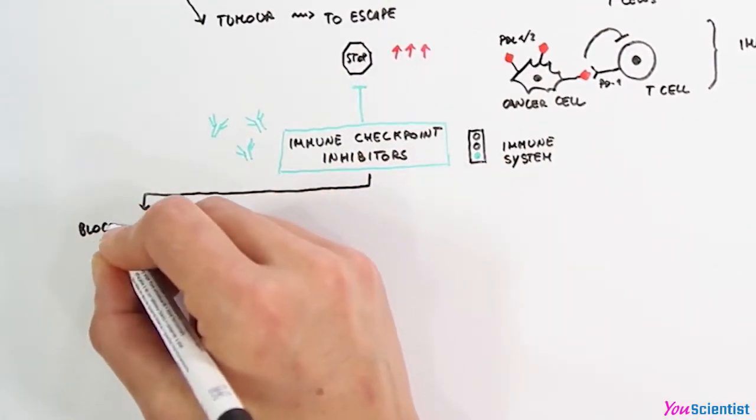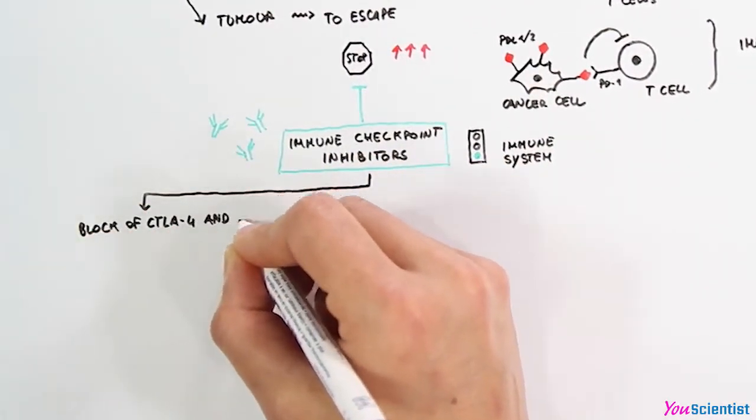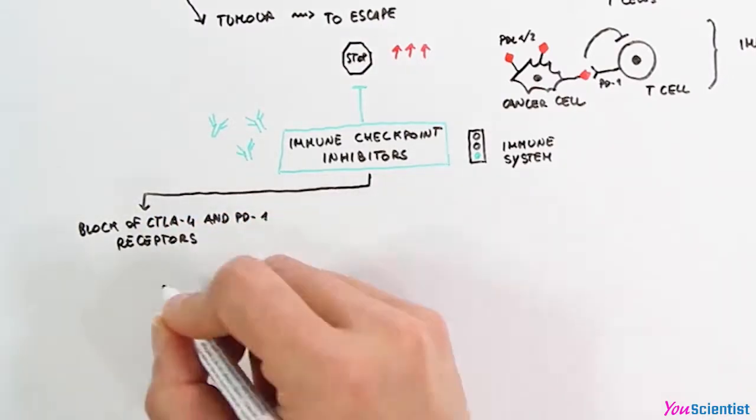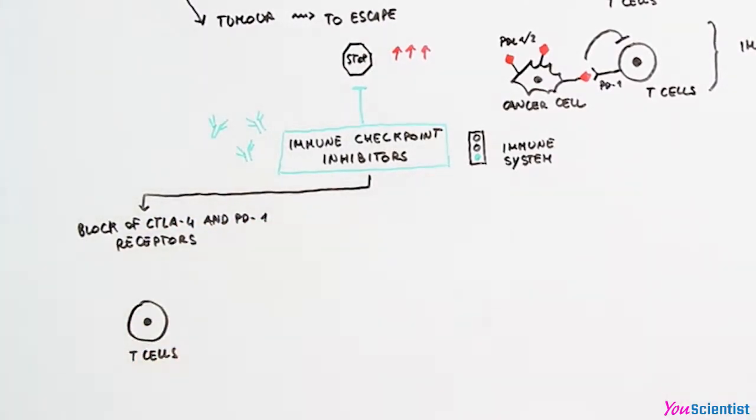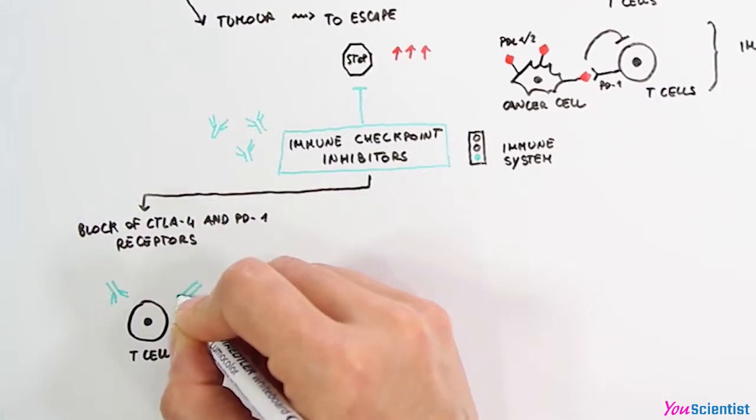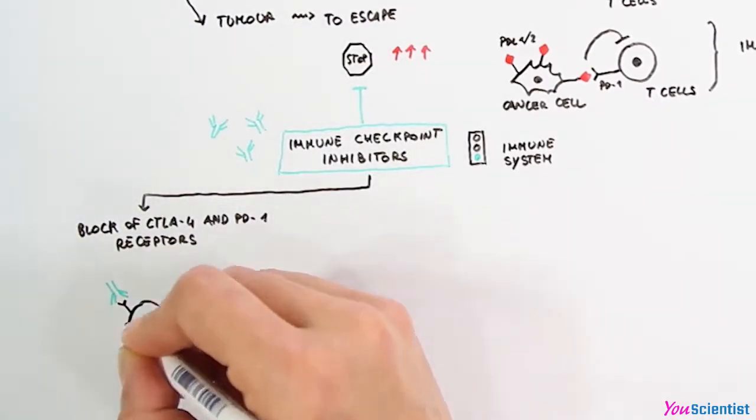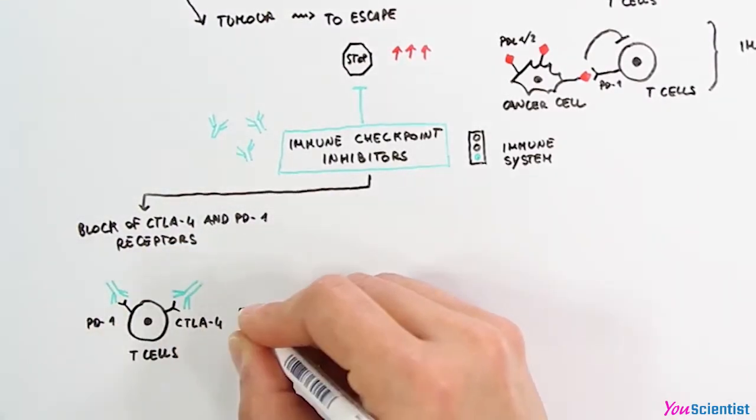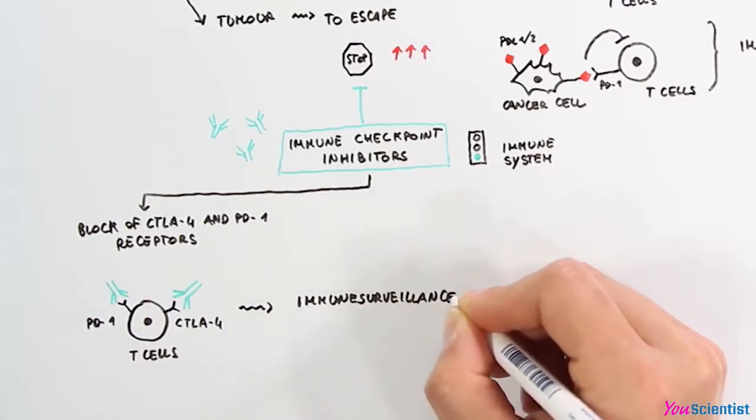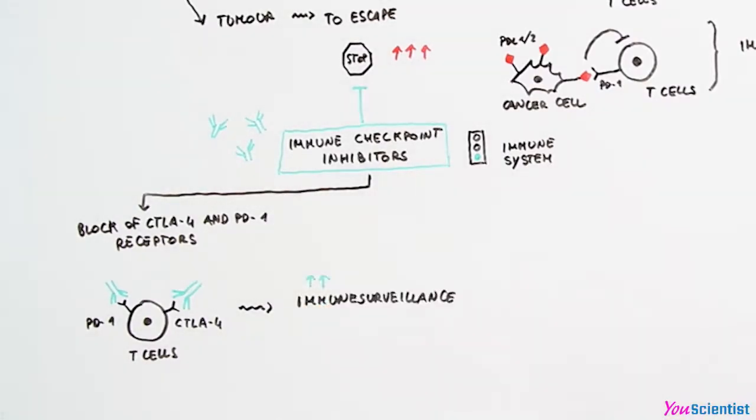In some cases, these drugs block CTLA-4 or PD-1 receptors on T cells. Indeed, they are antibodies properly designed to block the binding site for their ligands. Therefore, immunosurveillance is restored and cancer cells are recognized and killed by the immune system.